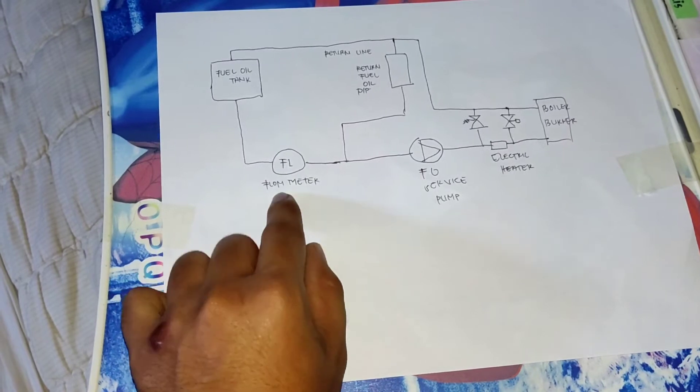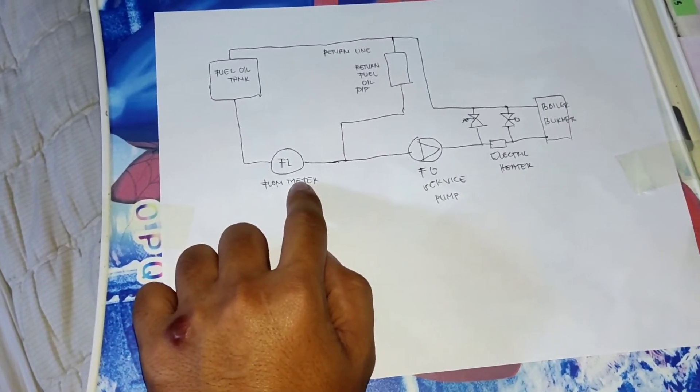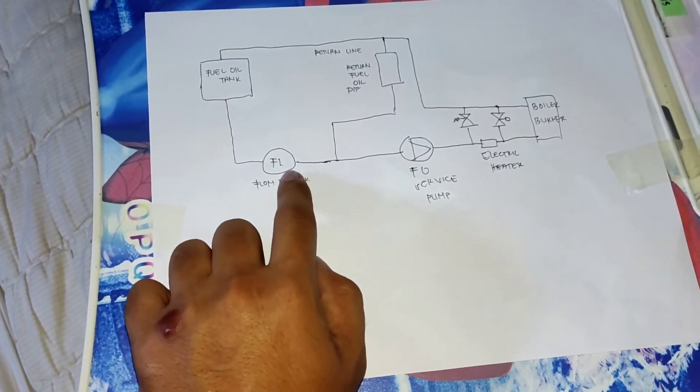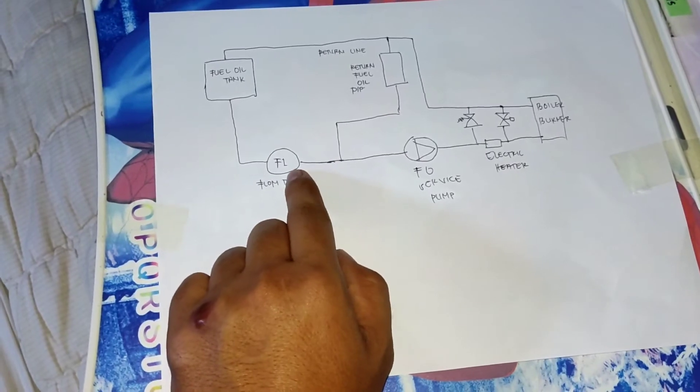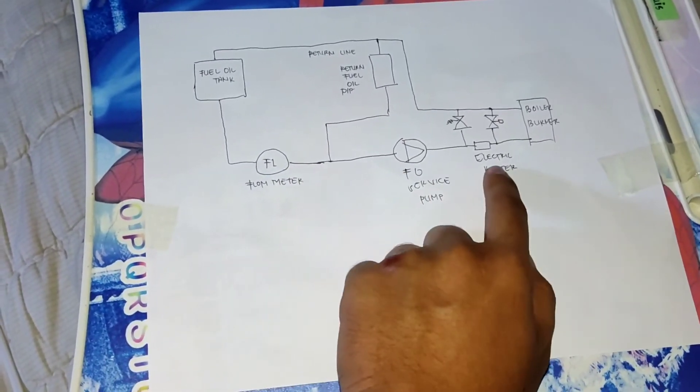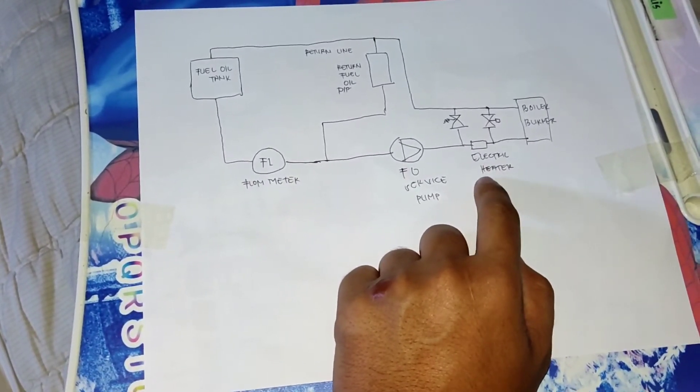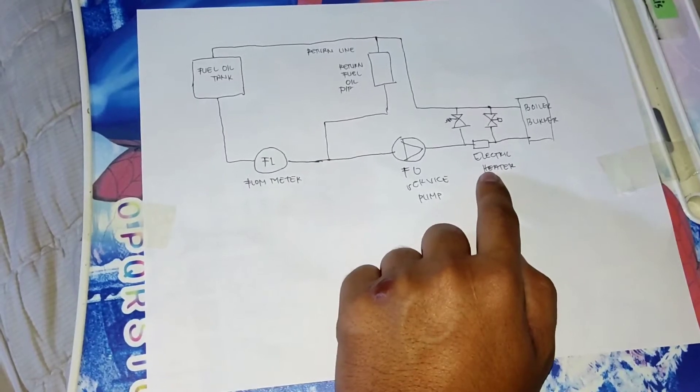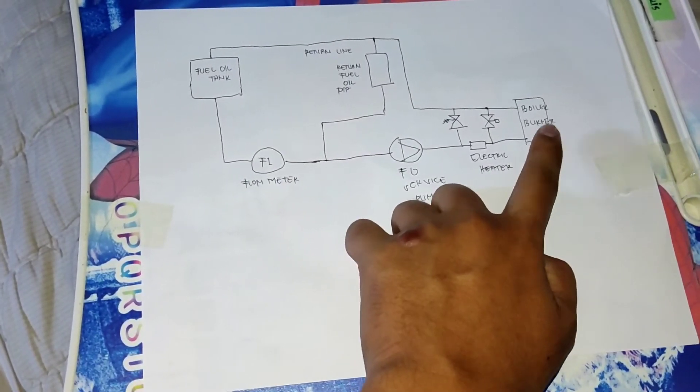The fuel will flow through the pipe to the flow meter. And the purpose of flow meter is to measure the fuel consumption. After the measuring of fuel consumption, the fuel will proceed to the electric heater. The purpose of electric heater is for heating the fuel oil before it enters the boiler.